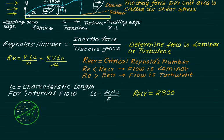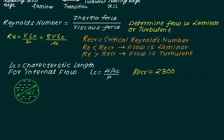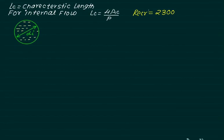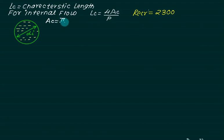The characteristic length LC for internal flow is defined as four times the cross-sectional area upon perimeter. The critical Reynolds number for internal flow is 2300. For a pipe with fluid flowing inside, the cross-sectional area is AC equals pi by 4 multiplied by di squared and the perimeter is pi times di.